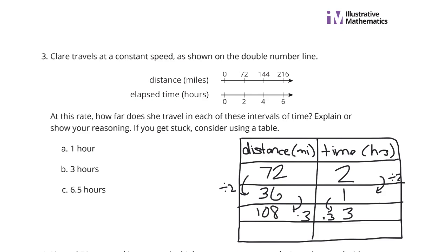Once again, once I'm in that 1, I can multiply by 6 and 5 tenths here. And so, 36 times 6 and 5 tenths is 234 miles in those 6 and 5 tenths hours.